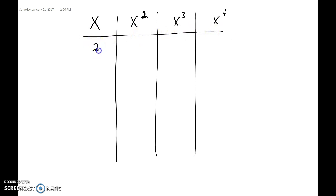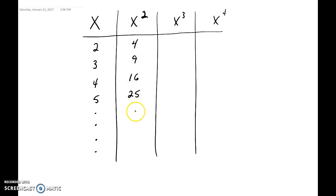You start with x values 2, 3, 4, 5 — you'll normally keep going, and for x squared you'd probably write up to 15, but we're only filling in a few. For x squared: 4, 9, 16, 25. Then we cube them for x cubed: 8, 27, 64, 125, and so on.